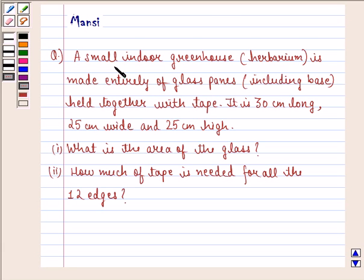The question says a small indoor greenhouse herbarium is made entirely of glass panes including the base held together with tape. It is 30 cm long, 25 cm wide and 25 cm high. First question is what is the area of the glass and second is how much tape is needed for all the 12 edges.